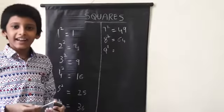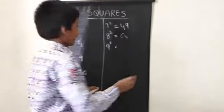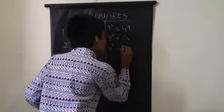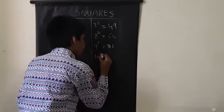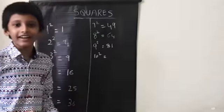Nine square: nine into nine is eighty-one. Ten square: ten into ten is one hundred.